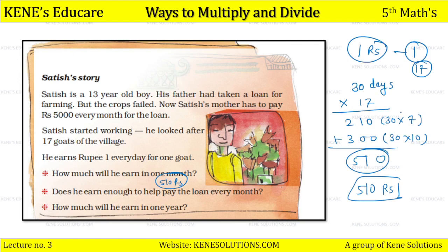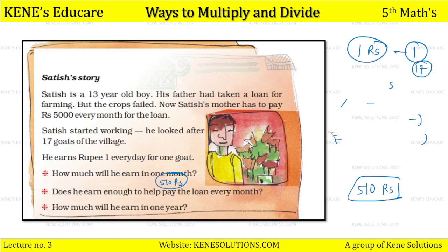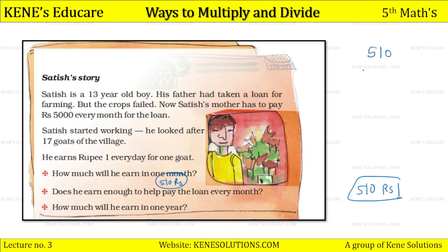His monthly income is 510 rupees. For one year, there are 12 months, so we multiply 510 by 12 to find his yearly salary. First we calculate 510 multiplied by 2, which gives 1020, and 510 multiplied by 10 gives 5100.